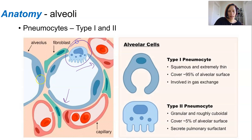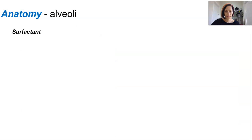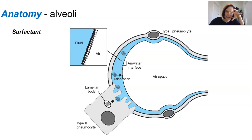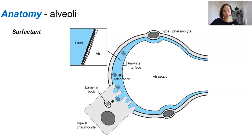Type 2 pneumocytes are round and only take up about five percent of the surface area that type 1s do. They secrete a fluid known as surfactant, which is really important for the functioning of the alveoli. This moisture allows oxygen coming into the alveoli space to be dissolved and then diffused. CO2 can evaporate into the air when exchanged from the bloodstream. Surfactant makes a monolayer on the inner surface of the alveoli to decrease surface tension so that the water molecules don't all stick together.